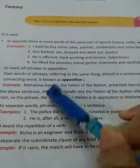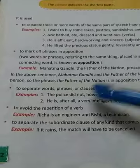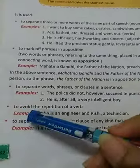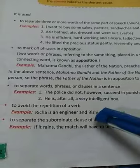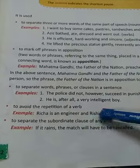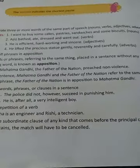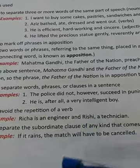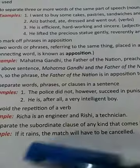To separate words, phrases or clauses in a sentence, we use a comma. For example: 'The police did not, however, succeed in punishing him.' Also, to avoid the repetition of a verb: 'Richa is an engineer and Rishi, a technician.' To separate a subordinate clause that comes before the principal clause — for example, 'If it rains' is the subordinate clause, and 'the match will have to be cancelled' is the principal clause, so we use a comma to separate these two clauses.